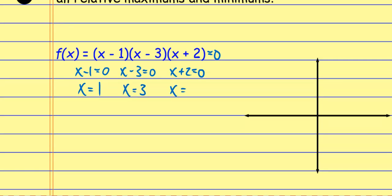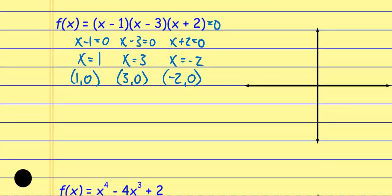So I get these ordered pairs: (1, 0), (3, 0), and (−2, 0). Then I'm going to draw a quick unofficial sketch off to the side. If I look at that sketch, I've got intercepts at −2, 1, and 3.